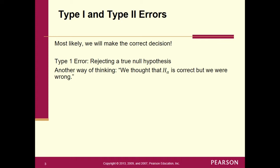The media actually has a name for a Type 1 error — it's called a false positive. When you hear the media or medical field call something a false positive, they're giving a Type 1 error a different name. That's all — a Type 1 error has been made, and it would be called a false positive.